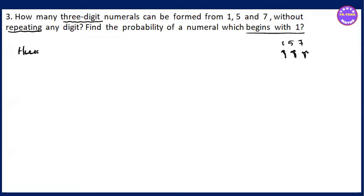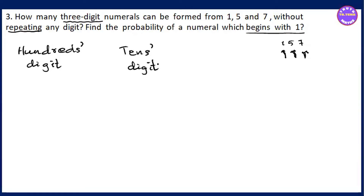Hundreds — 100 digits. And one digit is 10 digits. And one digit is one digit. That's the beginning of the second row; we're going to use one digit.